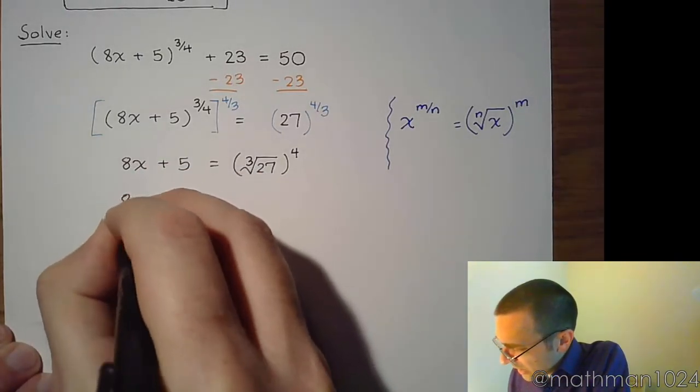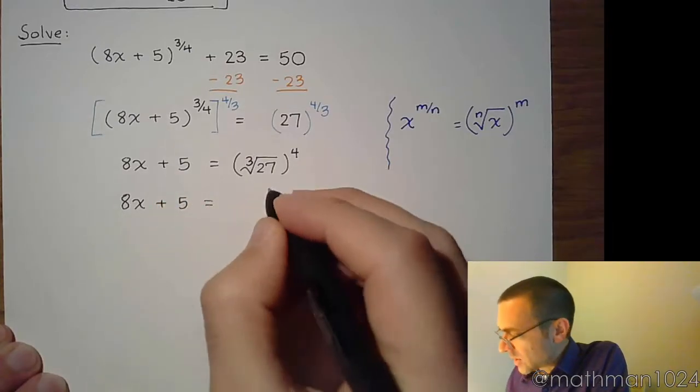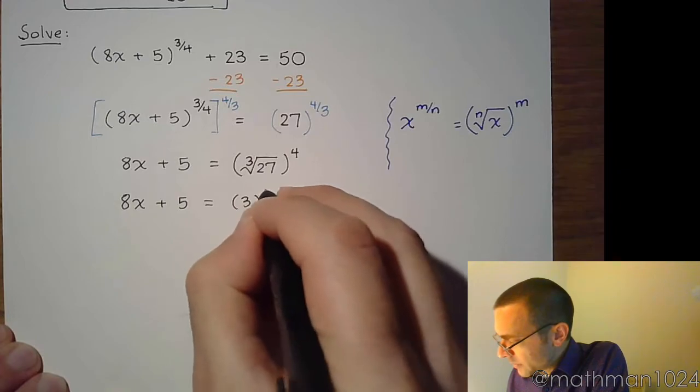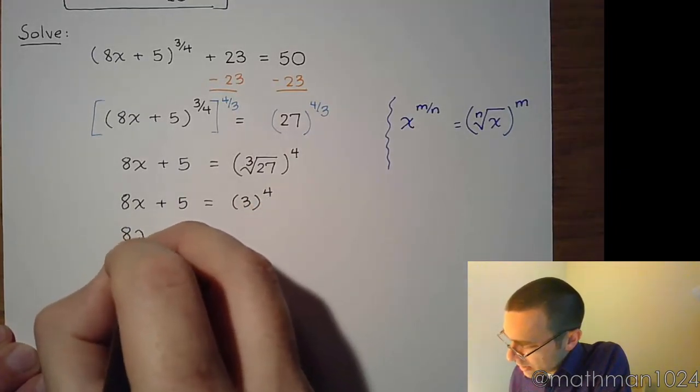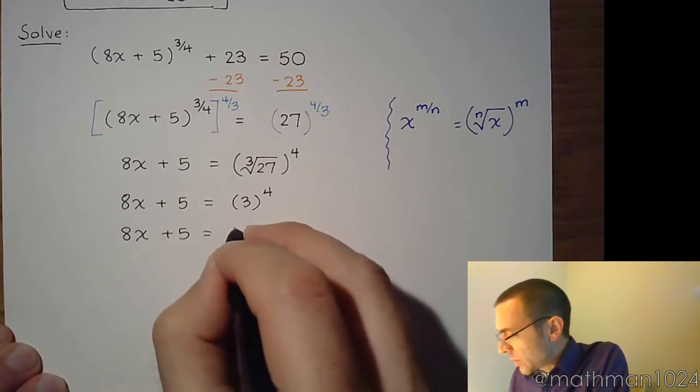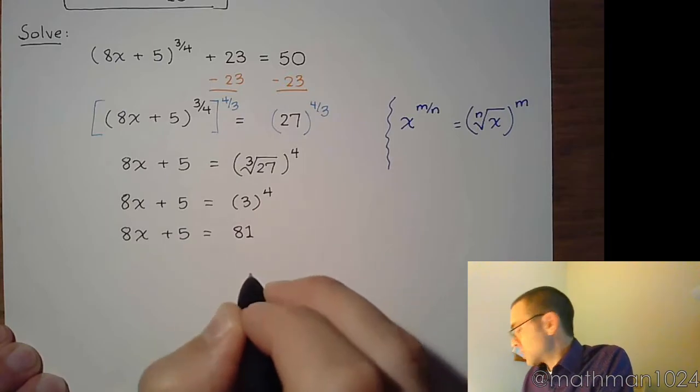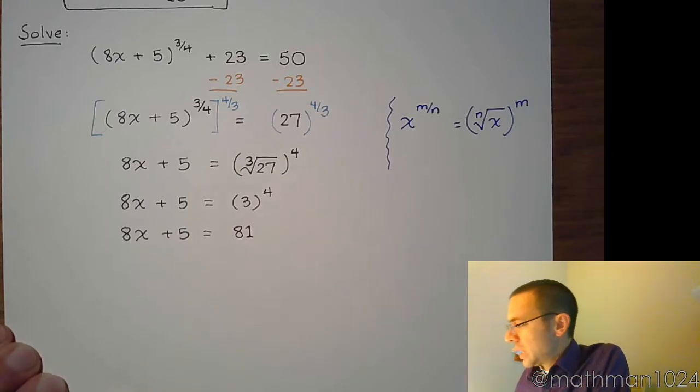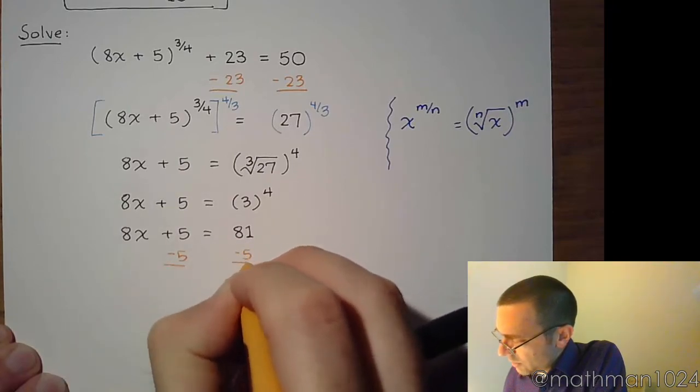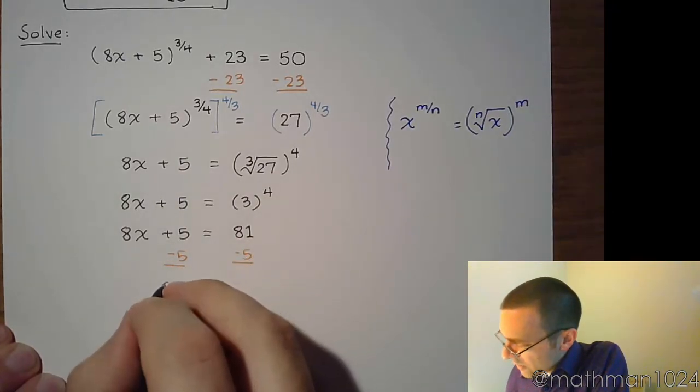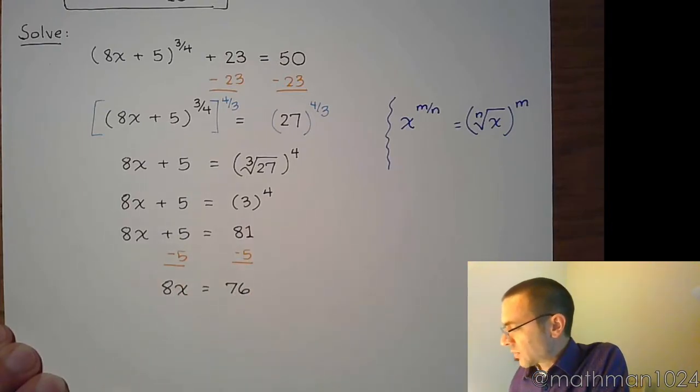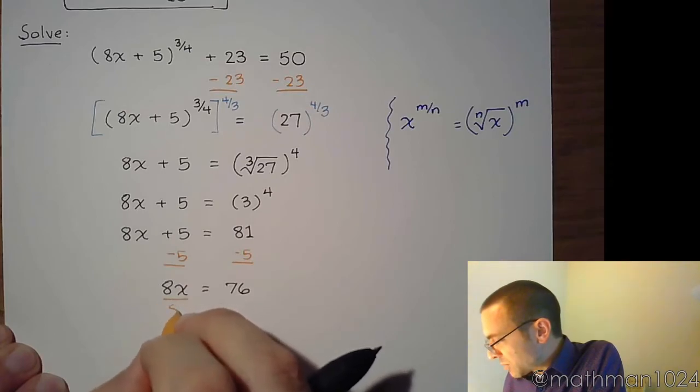And so before we start getting x by itself, I'm going to go ahead and simplify what's on the right side. The cube root of 27 is 3, so that's 3 to the fourth. Keep on working this out. 3 to the fourth power is 81. Four factors of 3. And now you have a nice linear equation. So you know what to do. Subtract 5 on both sides. That gives us 76. Divide both sides by 8.